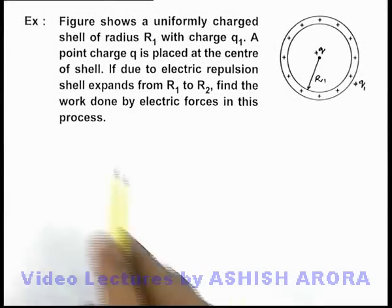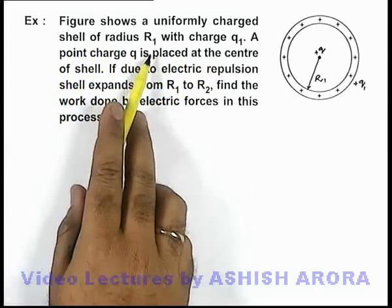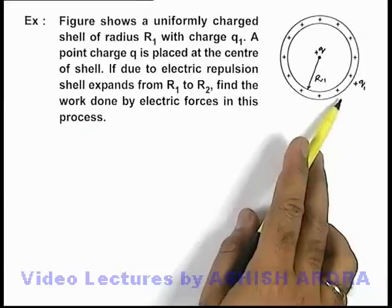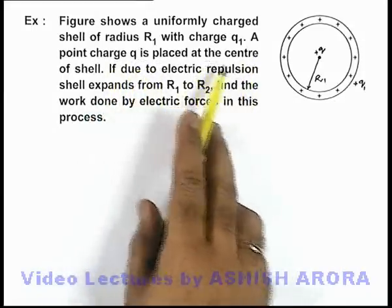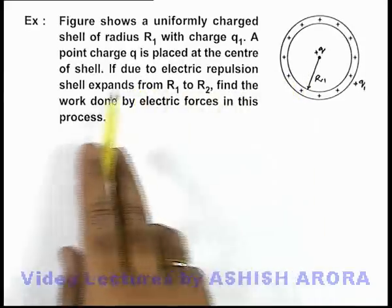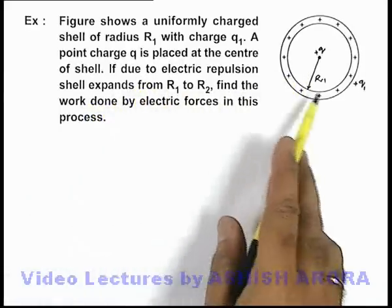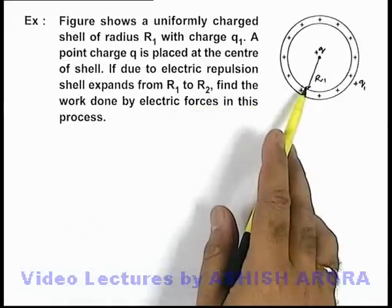In this example, the figure shows a uniformly charged shell of radius R₁ with charge q₁. A point charge q is placed at the center of the shell. If due to electric repulsion the shell expands from radius R₁ to R₂, we are required to find the work done by the electric forces.